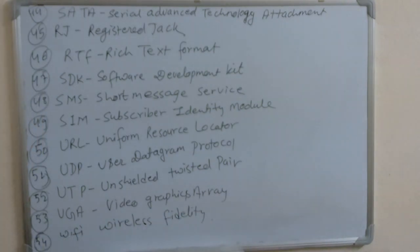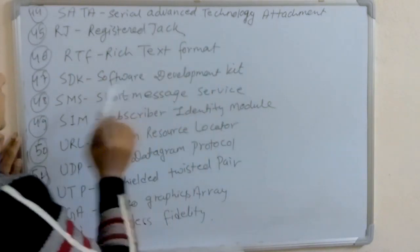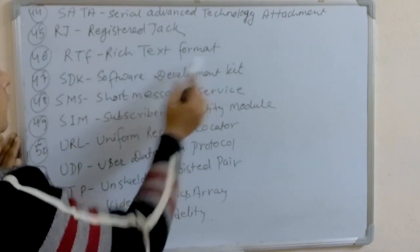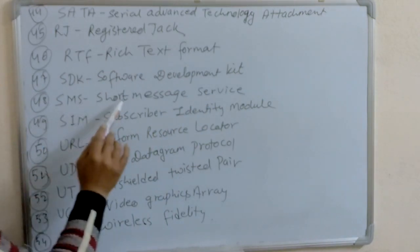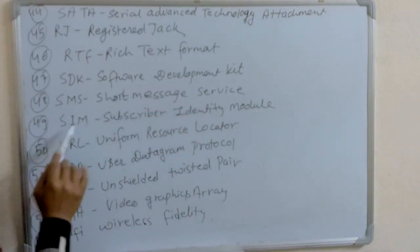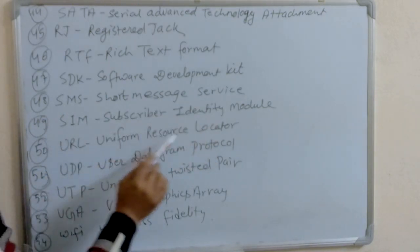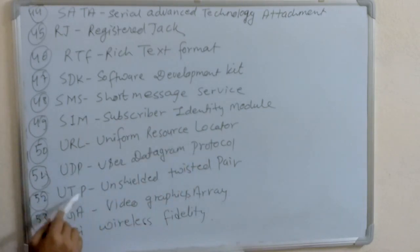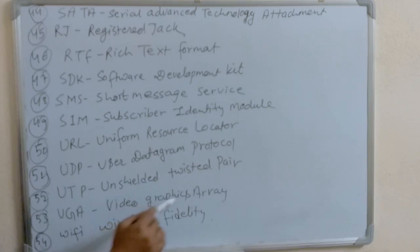Quick recap: SATA — Serial Advanced Technology Attachment. RJ — Registered Jack. RTF — Rich Text Format. SDK — Software Development Kit. SMS — Short Message Service. SIM — Subscriber Identity Module. URL — Uniform Resource Locator. UDP — User Datagram Protocol. UTP — Unshielded Twisted Pair. VGA — Video Graphics Array. WiFi — Wireless Fidelity.